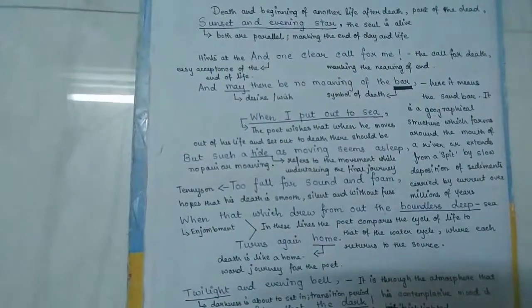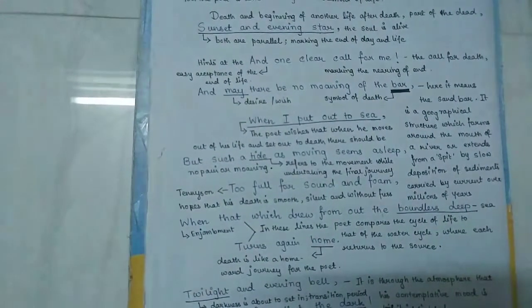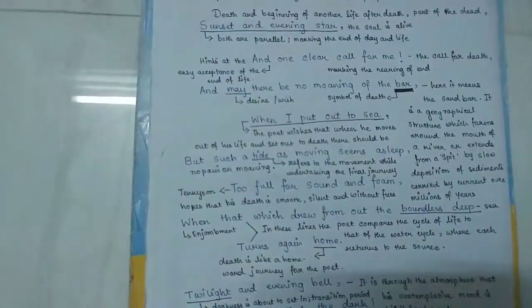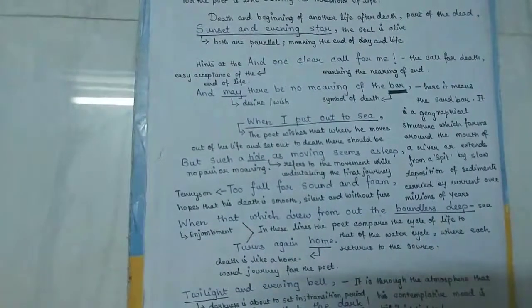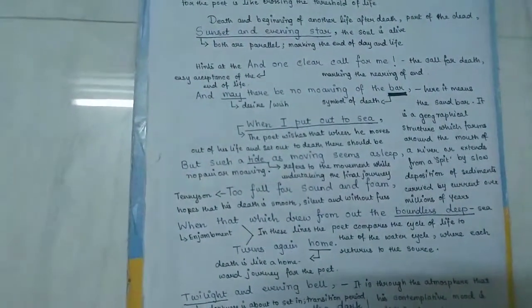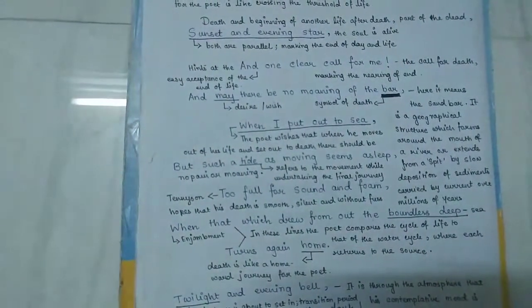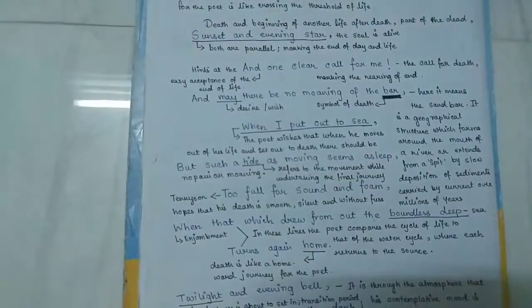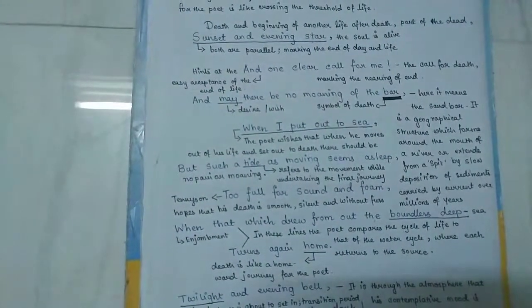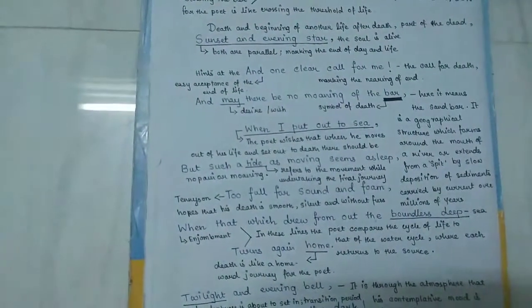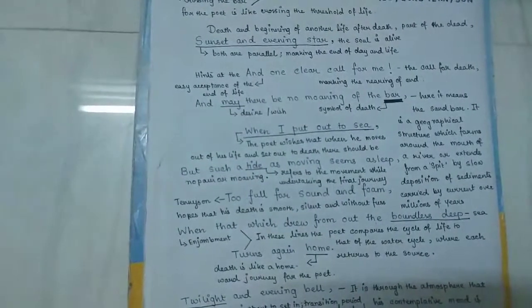When that which drew from out the boundless deep turns again home. In these lines there has been the use of enjambment. The poet compares the cycle of life to that of the water cycle, where each returns to the source, just as water evaporates from the river, reaches the clouds, and again comes back to the river in the form of rain.